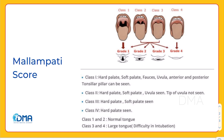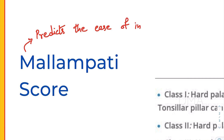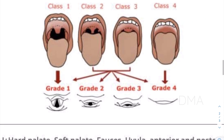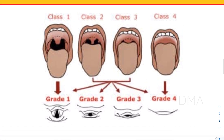First of all, what is this Mallampati score? This score is used to predict the ease of intubation. This score is assessed before intubating a patient. We ask the patient to sit upright, open their mouth, and stick out their tongue. We then visualize their pharyngeal structures, and based upon the structures we are able to visualize, we assign them a certain score that signifies the ease of intubation for that respective patient.